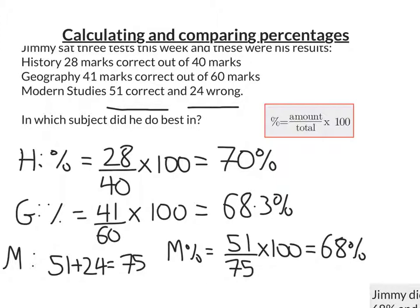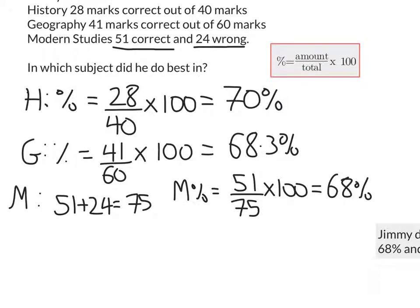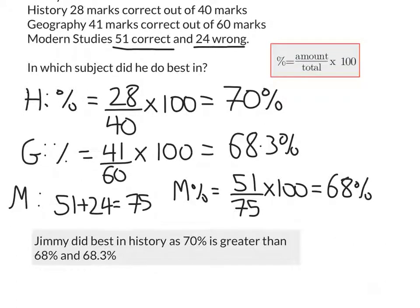Now that we've calculated our percentages, we need to compare them. And it seems that he did best in History as he got 70 percent. So what we need to do now is make a statement about this. Jimmy did best in History as 70 percent is greater than 68 percent and 68.3 percent.